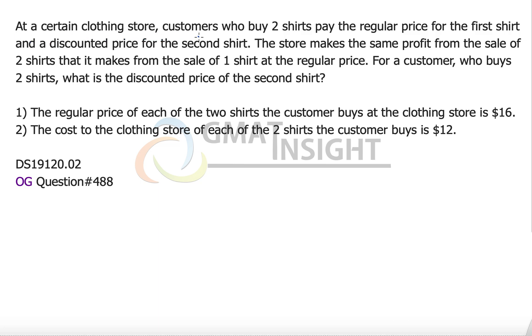At a certain clothing store, the customer who buys two shirts pays the regular price for the first shirt and a discounted price for the second shirt. The store makes the same profit for the sale of two shirts that it makes for the sale of one shirt at the regular price.